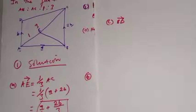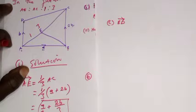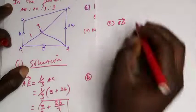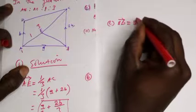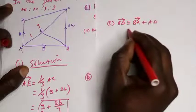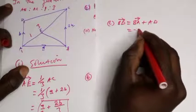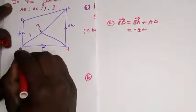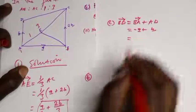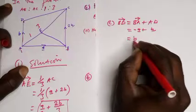Now for part c, let's find vector BD. To find BD you move via BA then AD. Since BA is in the opposite direction it is -a, plus AD gives b, so BD = b - a.